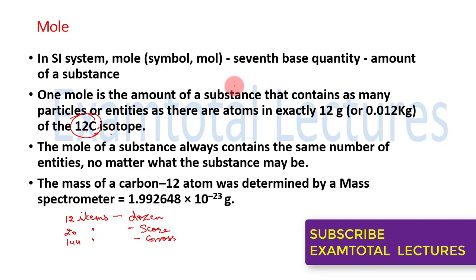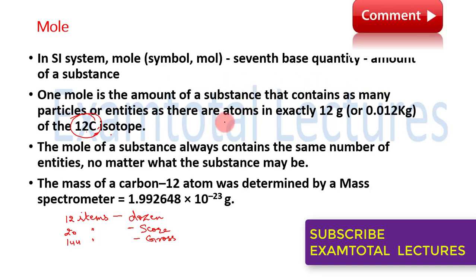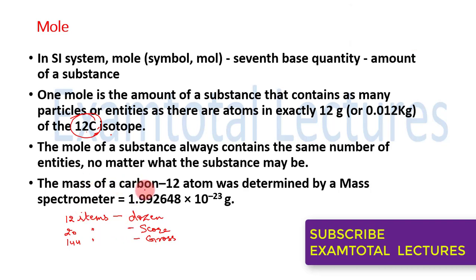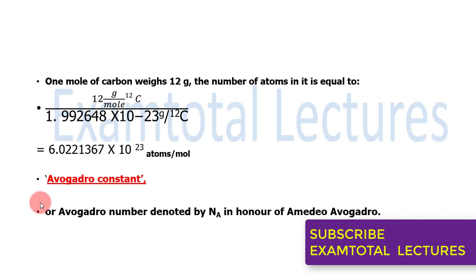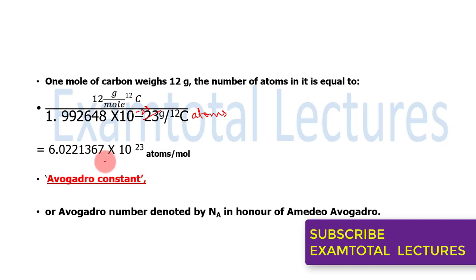The mass of a carbon-12 atom can be determined using various techniques. Mass spectrometry is one technique used to measure atomic mass nowadays. The mass of a carbon-12 atom is 1.992648 × 10⁻²³ grams. So one mole of carbon-12 is 12 grams.